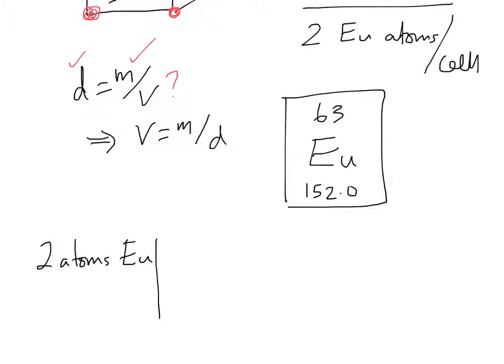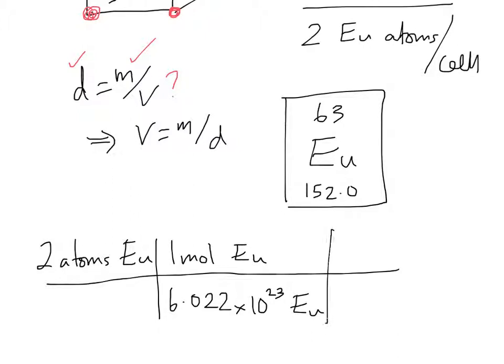So if we've got two atoms of europium, we can figure out how heavy this would be in grams by converting to moles. So a mole of anything, whether it's donuts or atoms, is just 6.022 times 10 to the 23rd of them. And that gives us moles.